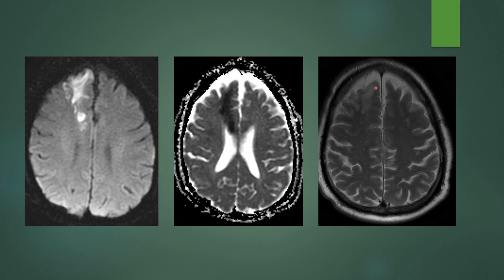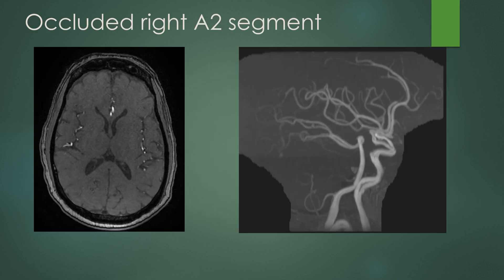This is a right ACA distribution infarct. On vascular imaging — in this case an MRA — you see the paired A2 segments with an abrupt cutoff of the right ACA. On a more lateral view of the MIP images, you can see the left ACA continuing on its arch around the corpus callosum and abrupt termination of the right A2 segment.